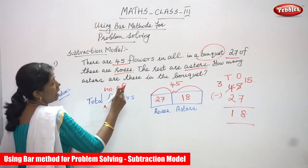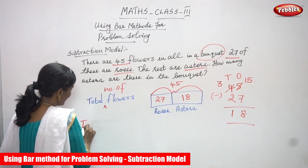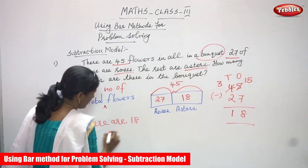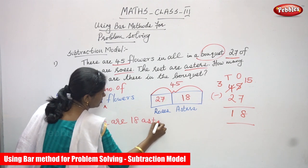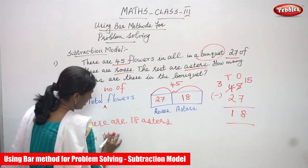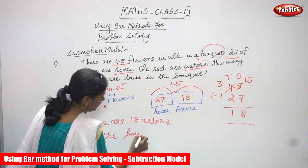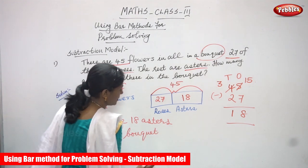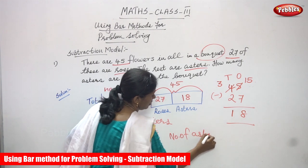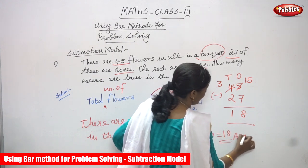Now we are going to write the answer. How many asters are there in the bouquet? The answer is: there are 18 asters in the bouquet. That is the right answer for that question. Otherwise we can write: number of asters is equal to 18. Asters is one kind of flower.